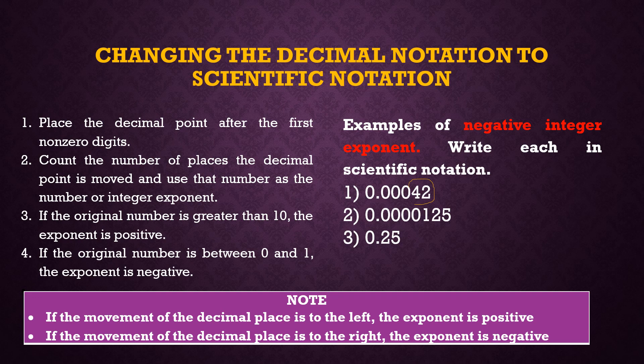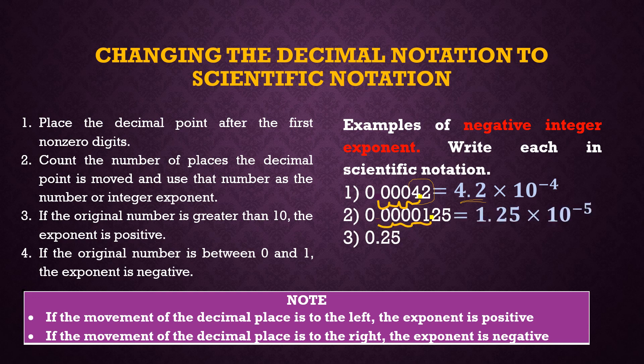For number one, 0.00042: we move the decimal point to the right — 1, 2, 3, 4 places — so the exponent is negative 4, giving us 4.2 times 10 raised to negative 4. For number two, 0.00125: we stop between 1 and 2, giving us 1.25 times 10 raised to negative 5 because we moved 5 places to the right.